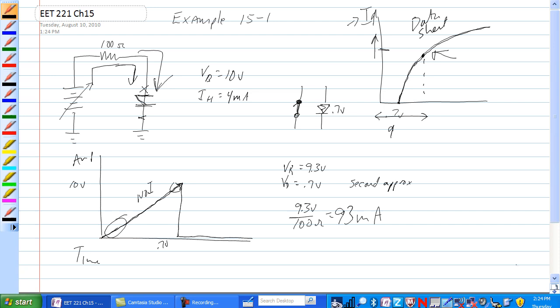So you'd have 93 milliamps through this circuit, 0.7 volts across the Shockley diode, and 9.3 volts across the resistor. Now, we have to look at the holding current.